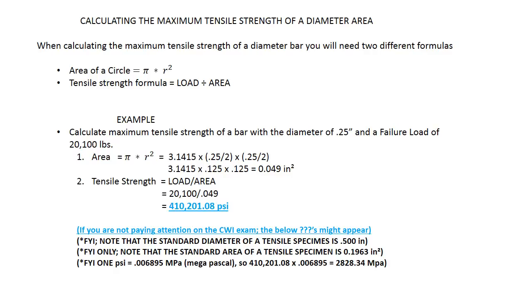First, we're going to find the area, which is π × r². So π is 3.1415 times the radius, which is 0.25 divided by 2, times 0.25 divided by 2.